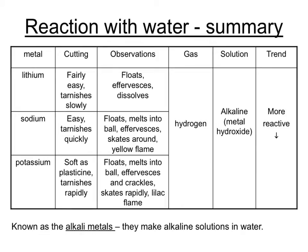Potassium is very, very soft and easy to cut and tarnishes very rapidly. It floats on the water, melts into a ball, fizzes and crackles and pops, and skates rapidly around the surface, dissolving very quickly with a lilac flame and producing hydrogen gas, leaving behind an alkaline solution of potassium hydroxide.